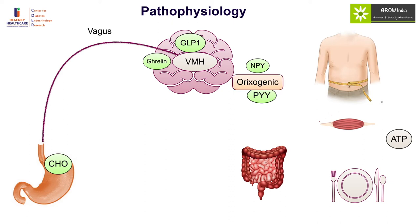We have talked about the acute control of energy metabolism: hunger mediated predominantly by the vagus nerve and ghrelin, and satiety signals to the ventromedial hypothalamus mediated by PYY and GLP-1. But these are just the acute controls. The chronic control of energy metabolism is largely done at the level of adipocytes, because adipocytes are the energy stores in the body and give the body an idea of how much energy is actually stored.